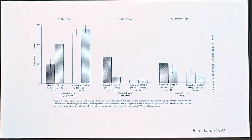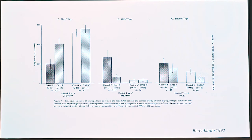For neutral toys, there was not much difference between boys and girls, or between CAH and non-CAH children. For girls' toys, boys — whether controls or CAH boys — didn't play with them. Control girls played with girls' toys, and CAH girls played much less with girls' toys. Importantly, control girls play as much with girls' toys as boys' toys. CAH girls play a little more with boys' toys. Boys, regardless of whether they are control or CAH, play with boys' toys. We can conclude that girls' toys are toys that boys don't play with — there's no such thing as boys' toys.